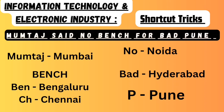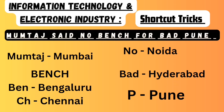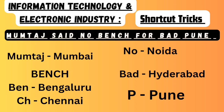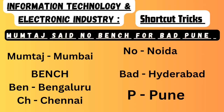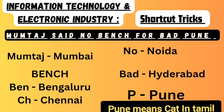The next shortcut sentence is 'Mumtaj set no bench for bad Pune.' In Mumtaj: M-U-M represents Mumbai. In 'No': N-O represents Noida. In 'Bench': B-E-N represents Bangalore, and C-H represents Chennai. 'Bad' refers to Hyderabad, and 'Pune' refers to Pune.